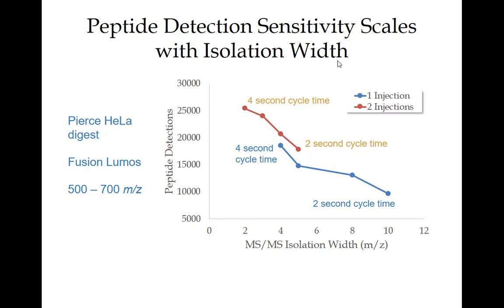The number of injections required scales with the window width. You already know what m/z range you want to cover — say 500 to 900. You've also determined you need to sample every 2 seconds because of your chromatography. If you have 20 m/z windows, that's 20 windows per cycle. If you need to cover down to 10 m/z windows, it's going to take twice as long — so 2x injections. You know the instrument scan rate is about 10 Hz, so you have 20 windows per cycle, and you multiply the window width by that.